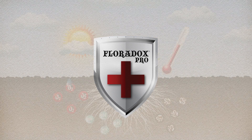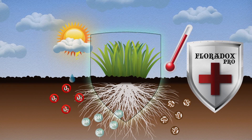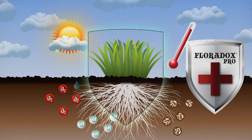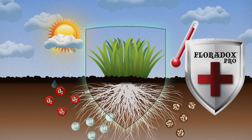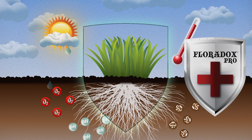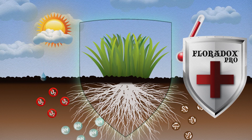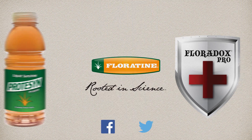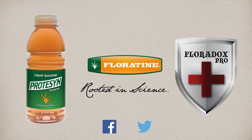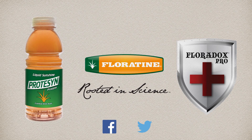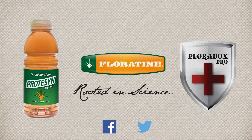To combat extreme stress conditions, Floridox Pro contains a very specific set of amino acids critical to phytohormone synthesis, designed to increase stress tolerance and improve injury recovery. So whether you're supplying amino acids in your maintenance sprays or responding to a specific stress event, applying high-value foliar amino acids will give your turf the boost it needs to carry out its biological functions more effectively.